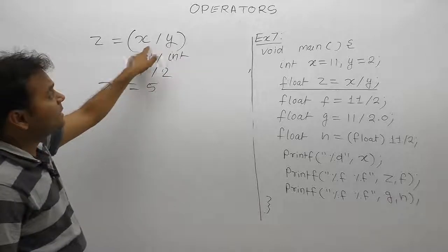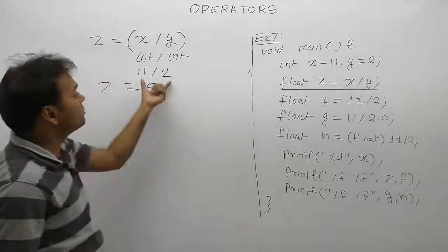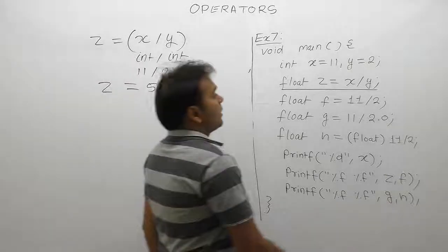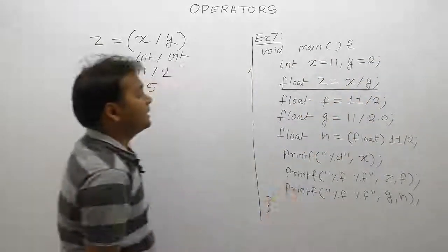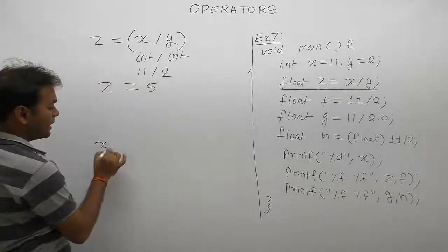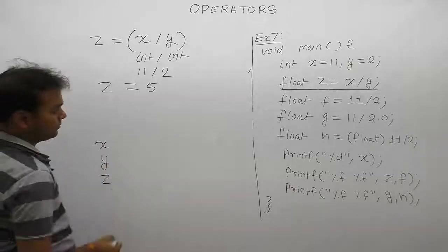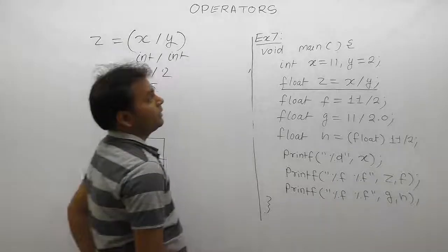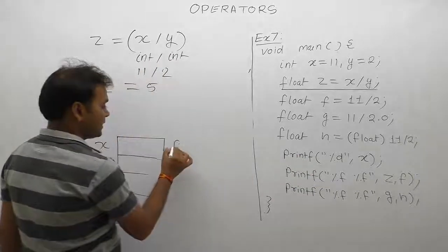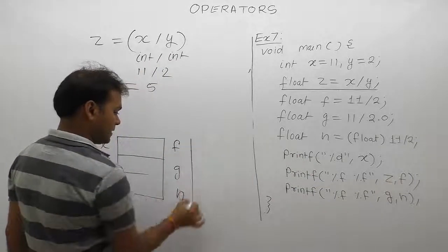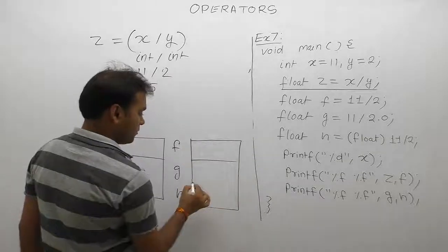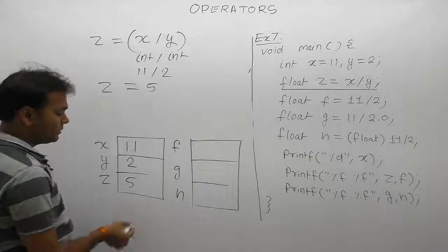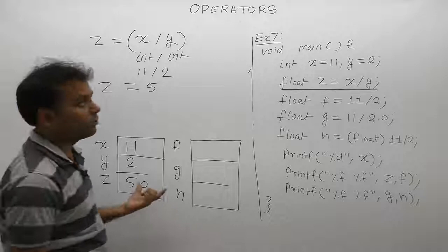The total variables are x, y, z, and then f, g, h—there are six variables. First, the value of x is 11, y is 2, then z becomes 5, or we can say 5.0 because z is float type.